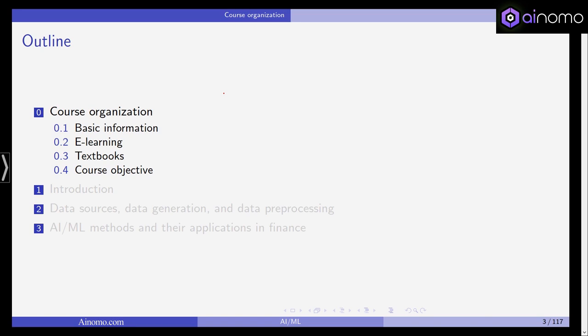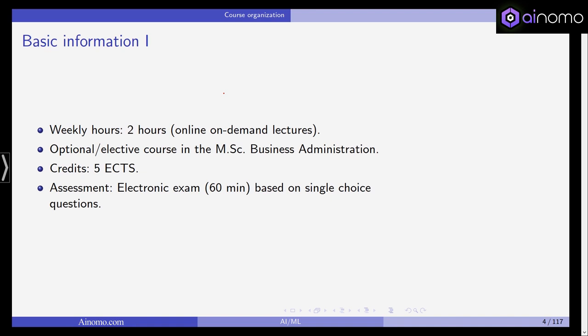So, if you are not studying this at Leipzig, you can probably skip a lot of this information, but you might be interested in, for example, the textbooks. So, this is a two-hours-per-week class. It's online and on-demand via YouTube. Here at Leipzig, it's an elective class in our Master of Science in Business Administration's degree, and you will get five ECTS points if you pass the final exam, and the assessment will be done via an electronic exam on our ILEAS system, and it is based on single-choice questions. Actually, it can also be multiple-choice in some cases, but most of them will be single-choice, and it will run for 60 minutes.